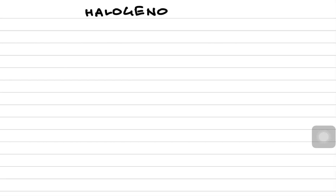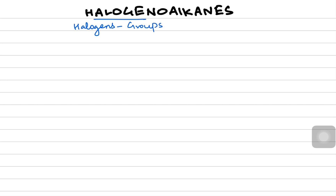Welcome back to another video by Cam Room 5. In today's video we're starting a new topic: halogenoalkanes. We're going to be talking about halogen atoms attached to organic compounds. Halogens are group 7, also called group 17, and they include fluorine, chlorine, bromine, iodine, and astatine.